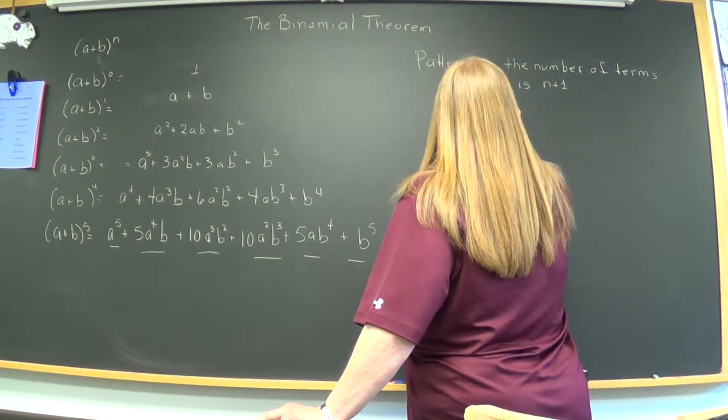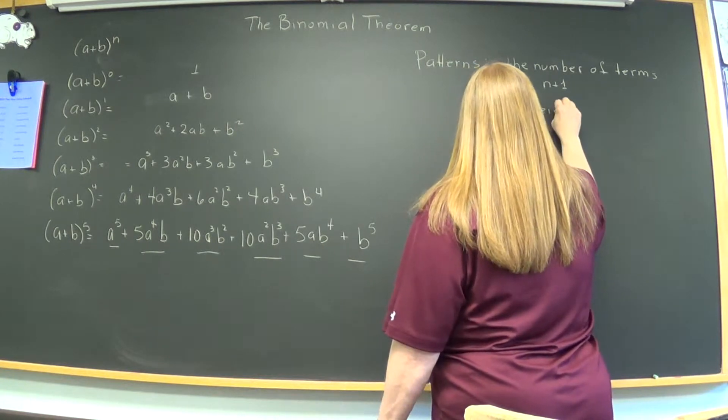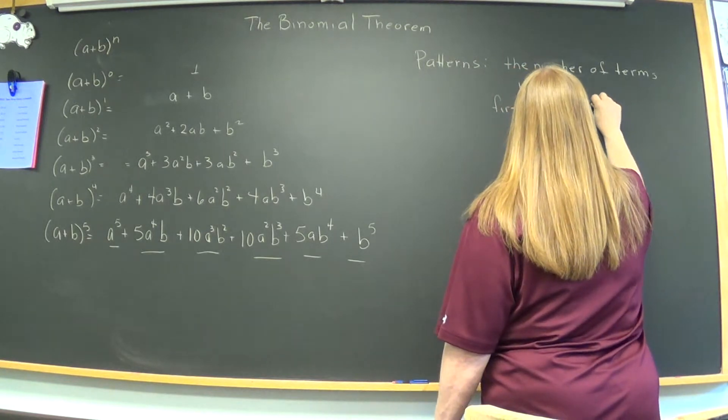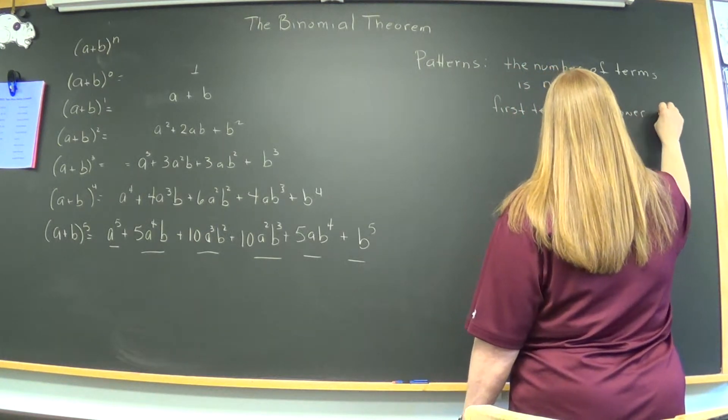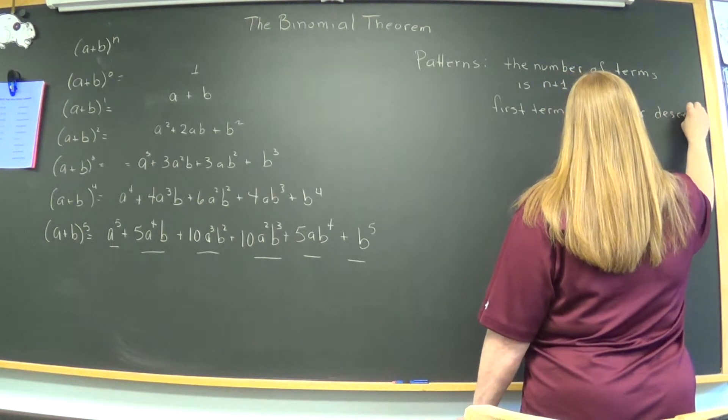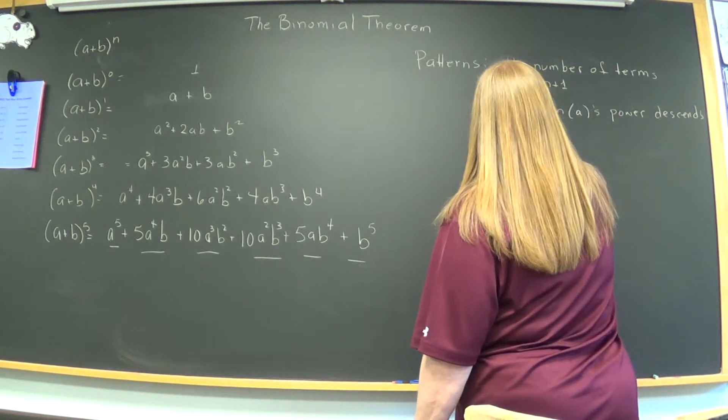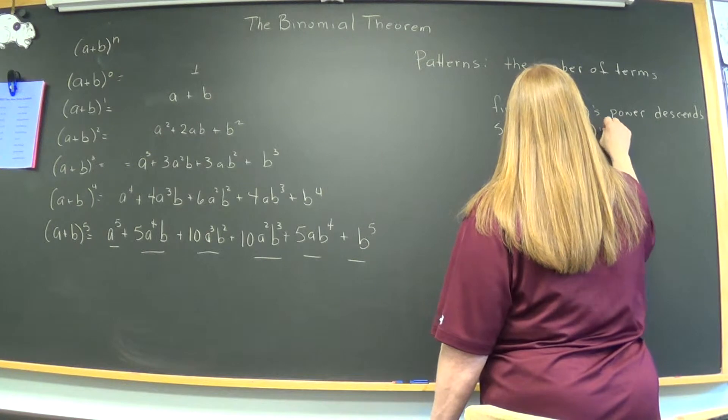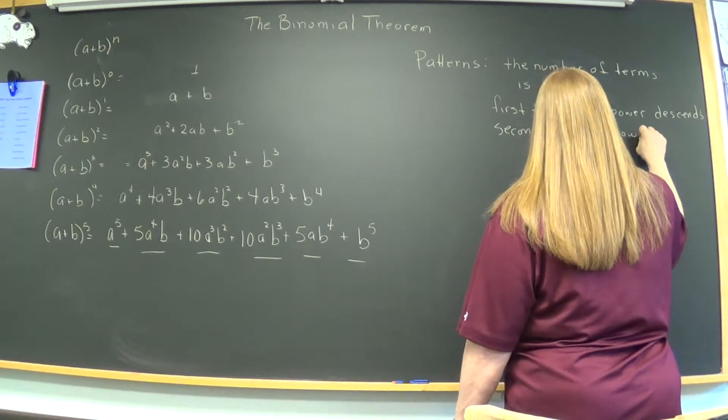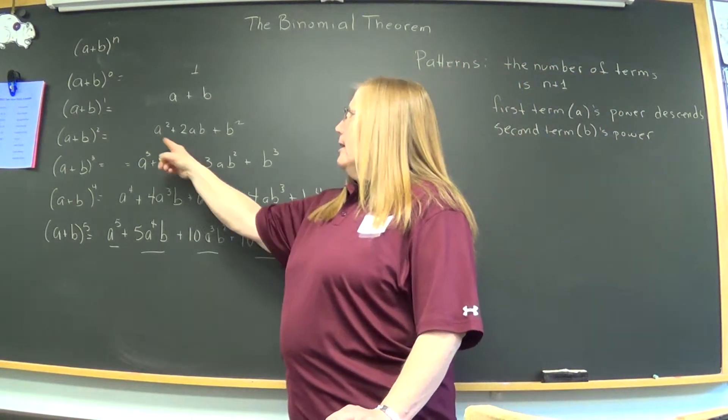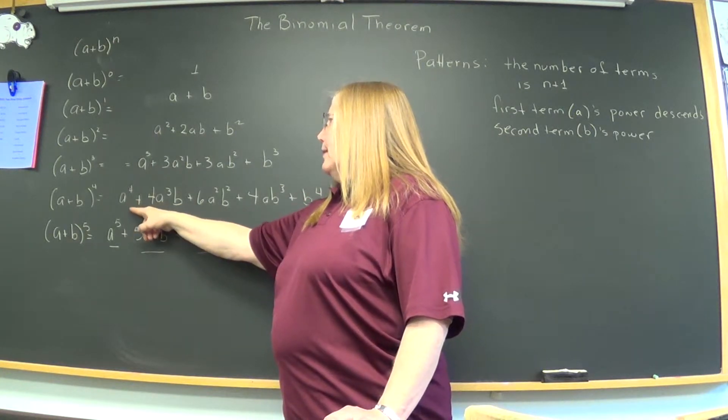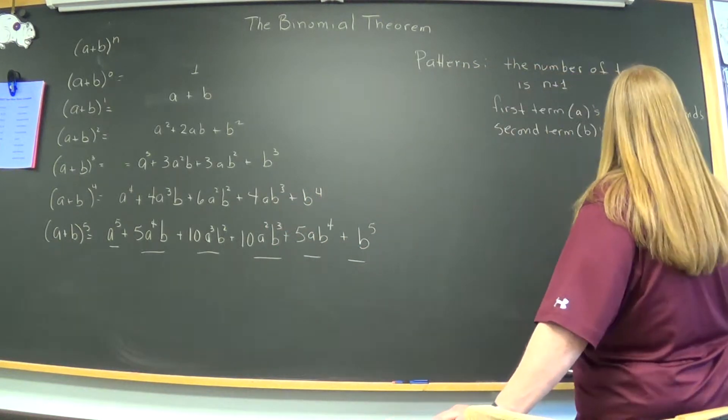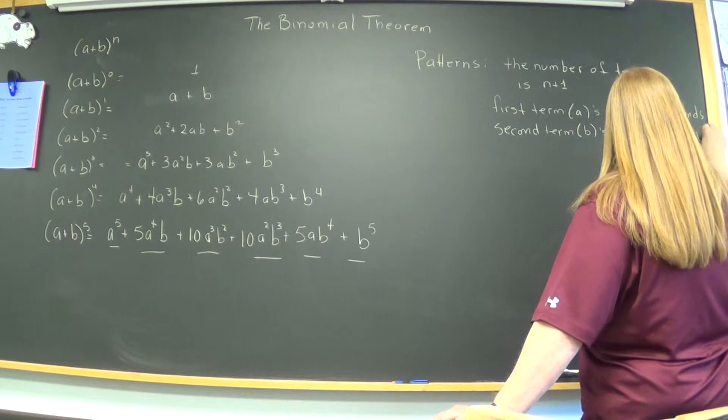So, say, first term, I'll put a, it doesn't have to be an a, but in our example it is power, first term's power descends, and the second term, you look and see, second term, in this case B, B is power, you can probably see what's going to happen here. Here, there is no B term, and then B appeared once, twice, so you can see the ascending power, so ascends.